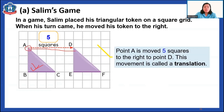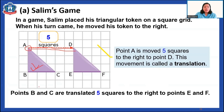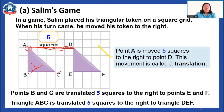Point A, or this vertex, is moved five squares to the right to point G. Let's count: one, two, three, four, five — correct, five squares. This movement is called translation. Translation, P5, is when you move a shape in a square grid from left to right, top to bottom, bottom to top, or right to left. Points B and C are also translated five squares to the right, so triangle ABC is translated five squares to the right to triangle DEL.